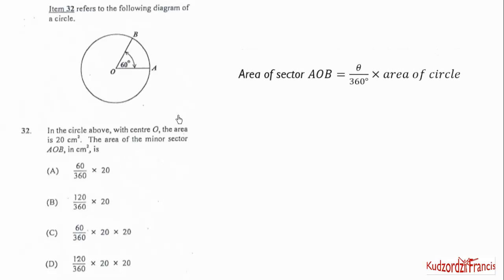So we know the area of a sector is θ/360 times area of circle. So we are given the area of circle to be 20. So we substitute 20 here. Then we are given the angle to be 60. So we substitute 60 here. To get 60/360 × 20 cm². And that will be the first option.